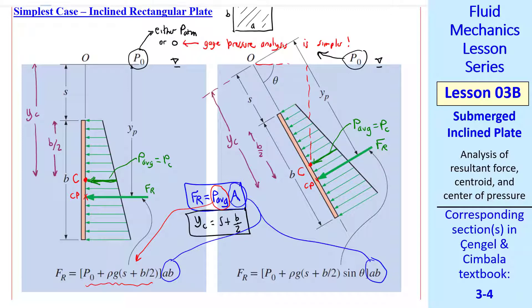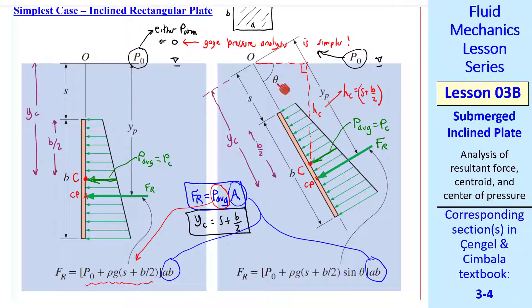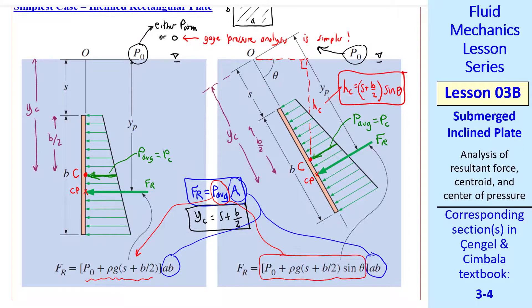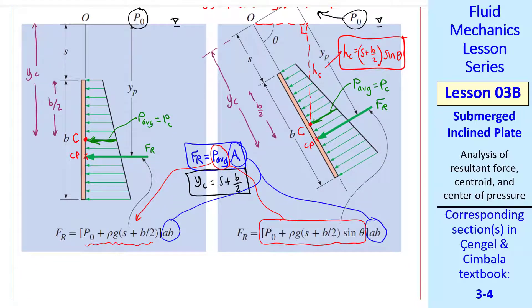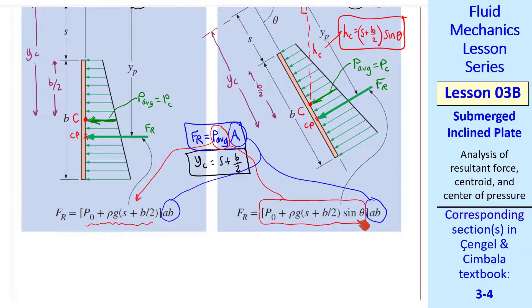For the inclined case, we need to do a little trig. Put a right angle there, and this height we'll call HC. HC will be S plus B over 2, that's this distance from the surface to C, times sine theta. That's the depth at which we calculate the average pressure, which is the pressure at C. So P average, for this inclined case, is P naught plus rho g, S plus B over 2 sine theta. So really, the only difference between vertical plate and the inclined plate is this factor of sine theta.